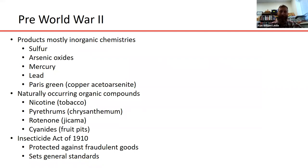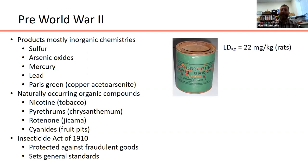We're going to start before the 60s — pre-World War II — because the war effort really changed the availability of different chemistries. Pre-WWII things were simpler: most chemicals applied as pesticides were inorganic — sulfur, arsenic, lead oxides, mercury, and one very popular compound called Paris green, which is a salt of copper. These were very effective at killing insects, but the problem was they were not very selective — they were also very effective at killing people. Paris green had an LD50 value of 22 milligrams per kilogram in rats, meaning it takes very little to be lethal.